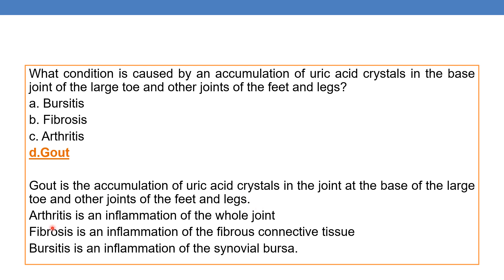Whereas arthritis is an inflammation of the whole joint — itis means inflammation, arthr means joint. Arthritis is inflammation of the whole joint. Fibrosis is an inflammation of fibrous connective tissue, and bursitis is an inflammation of the synovial bursa.